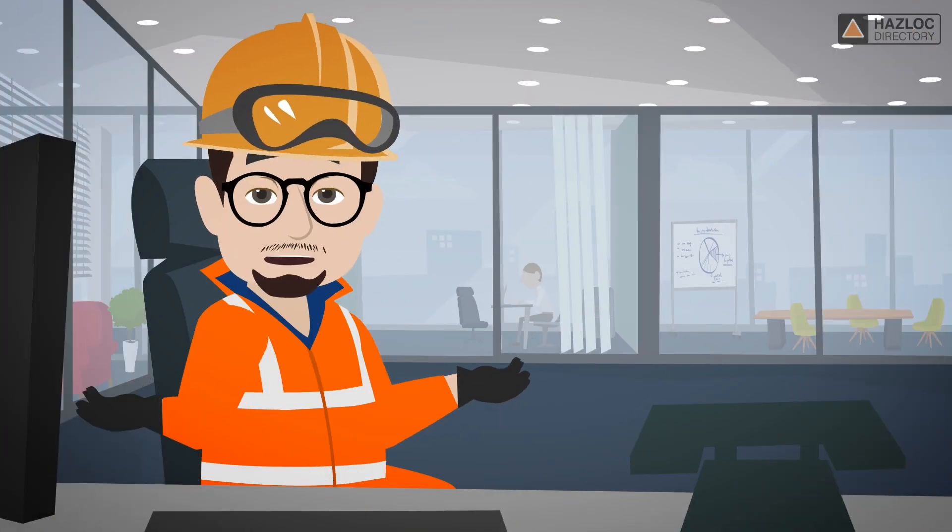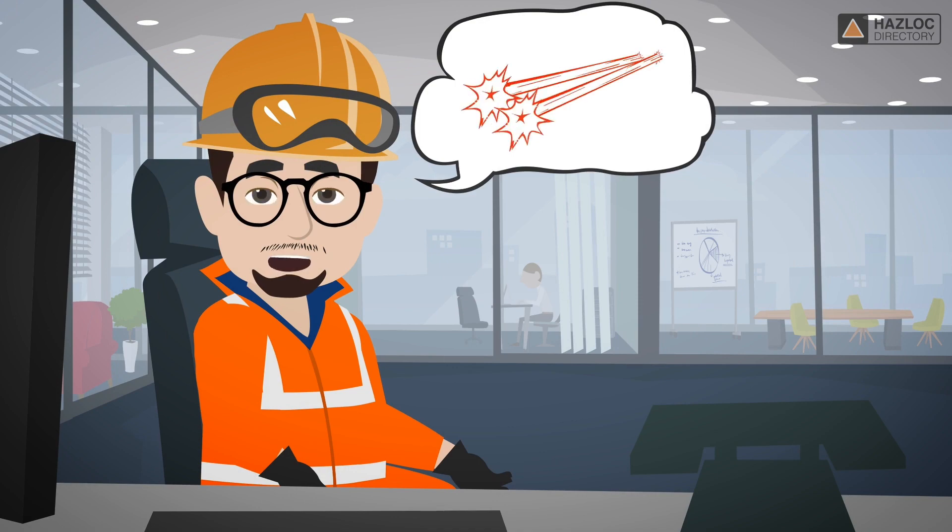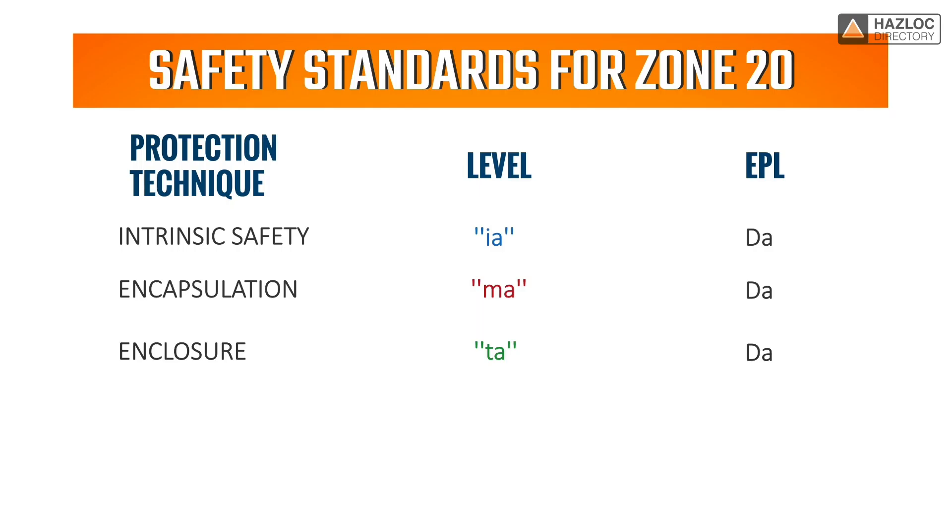Additionally, equipment with optical radiation features such as lasers can be installed in Zone 20 if the optical power is inherently safe using OP-IS protection or using an interlock system complying with OP-SH protection with an Equipment Protection Level of DA.